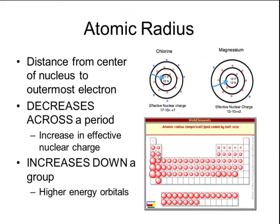As you move down a group on the periodic table, the atomic radius of each atom increases. Looking down group 2, the alkaline earth metals, the size of each atom gets larger and larger. This has to do with the number of energy levels in each orbital. In period 1 we're only in energy level 1, but in period 2 we're in energy level 2. Each period adds another layer of electrons, causing the radius to get larger as we move down the table.